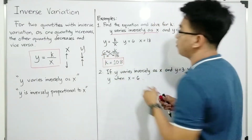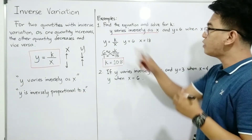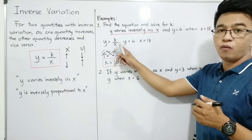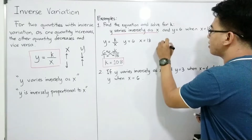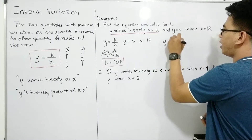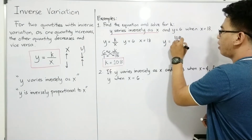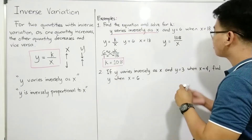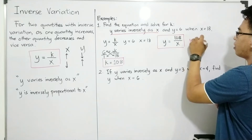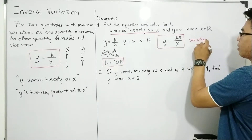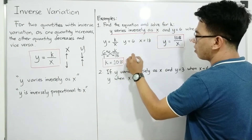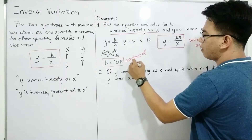This is now your constant of variation for item number one. Since we are asked to find the equation and solve for k, and we already have the value of k, we will replace k in the original equation. Your variation equation is y is equal to 108 over x, and k equals 108 is your constant of variation.